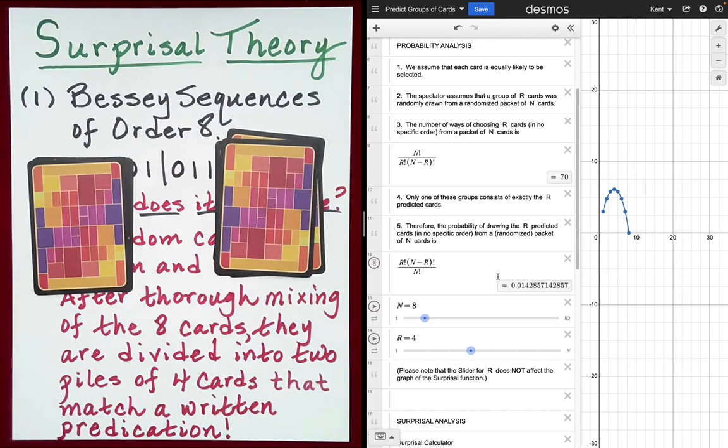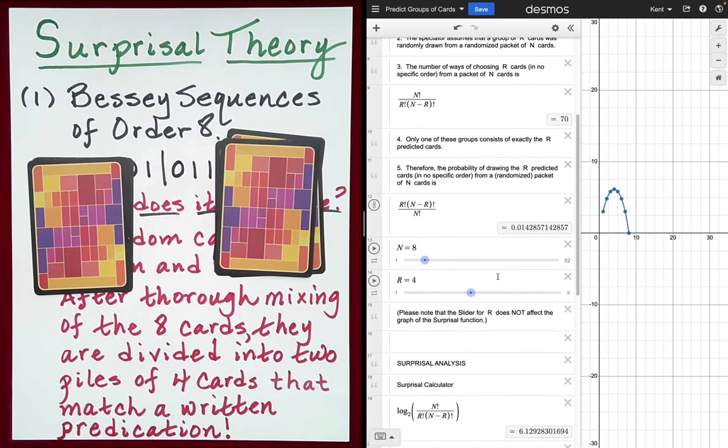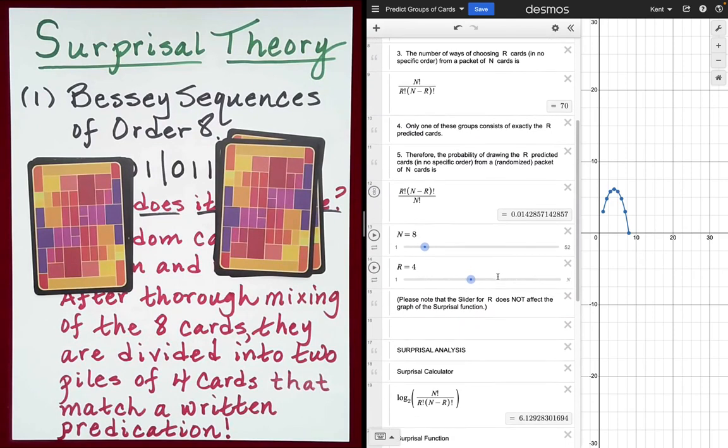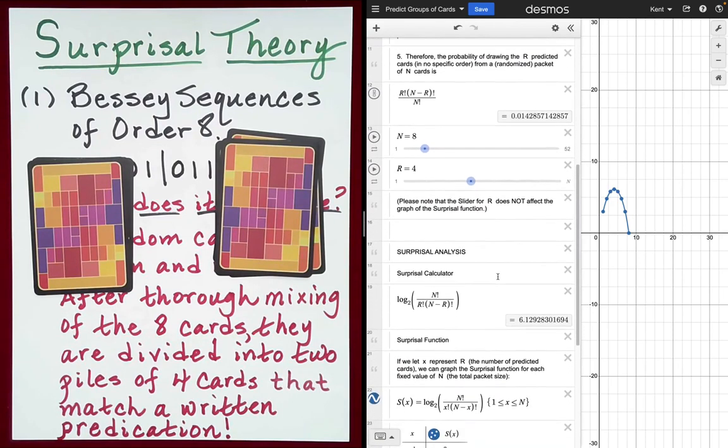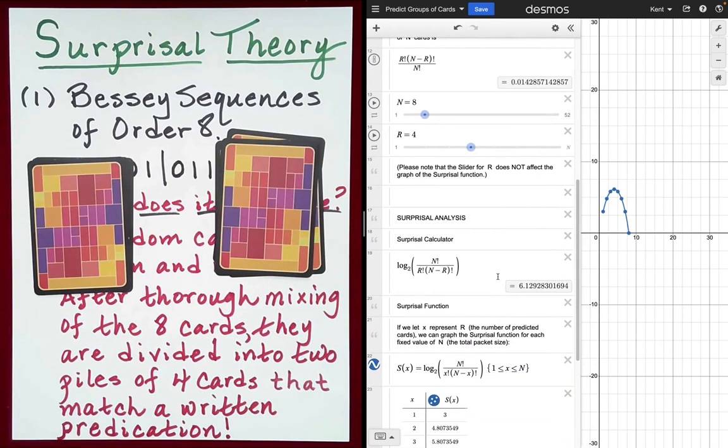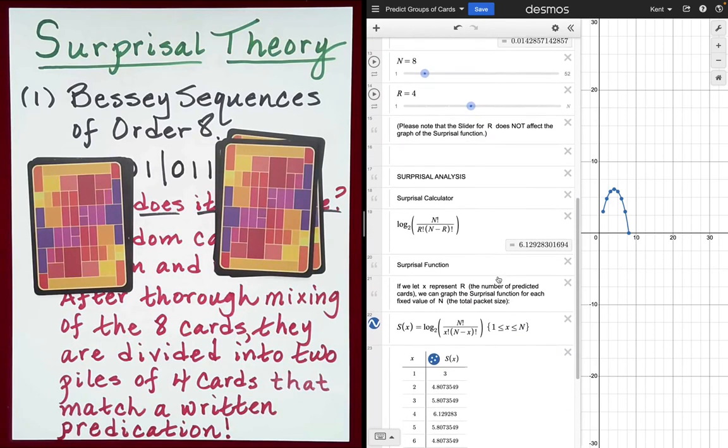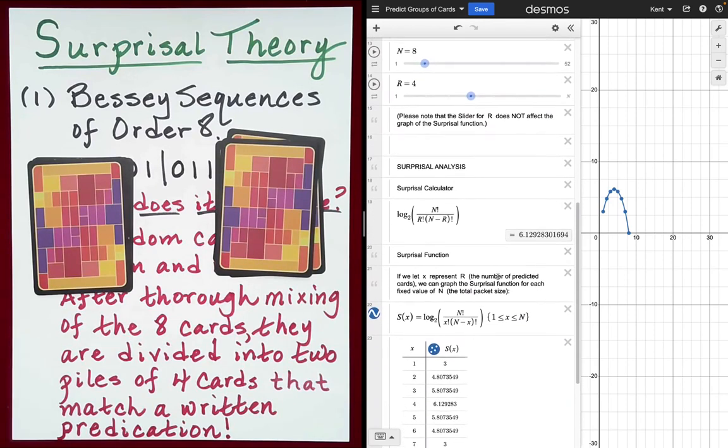Now, let's go ahead and convert that to a surprisal value, where we will be able to interpret it in terms of ordinary coin tosses. So let's move down here. So recall, the surprisal value for a random event is equal to log base 2 of 1 over the probability that that random event occurs. So here, what I've done is I've replaced R with the variable X so that we can graph it and also create a table of surprisal values.